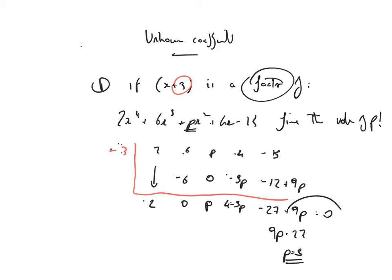I've then got minus 12 and minus 15, which is minus 27, and my 9p. Now that drops down there. Now what else do I know? Well, if it's a factor, the remainder must be 0, so that must be equal to 0. It's just a simple equation then. Bring that over, change the sign, p is equal to 3. Let's try example 2.